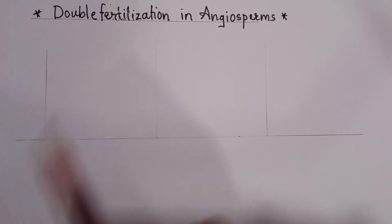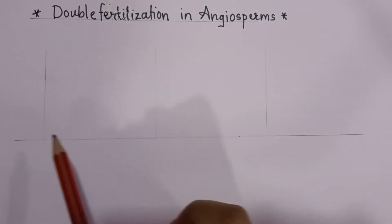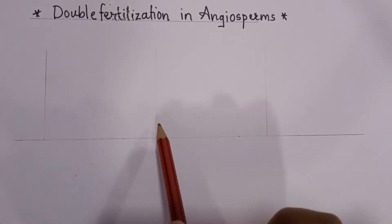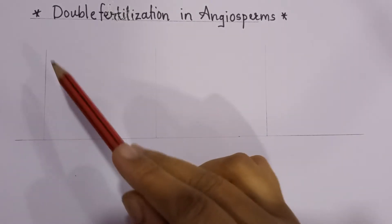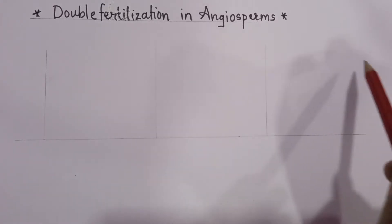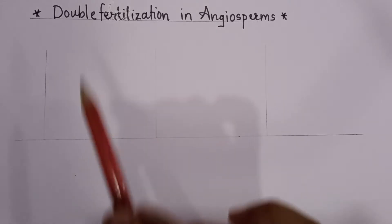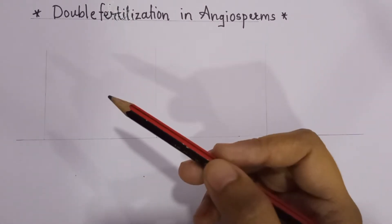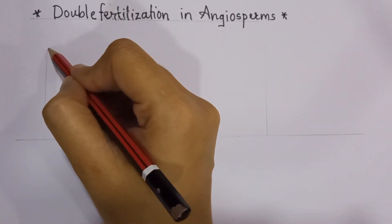Children, let us learn how to draw the diagram for double fertilization in angiosperms. I have drawn one horizontal line as a base and three vertical lines, because we are going to show the stigma, style, and part of the ovary three times, and then we will show only the section of the ovary. I'll first draw with pencil and then mark with sketch pen so it will be visible to you all.